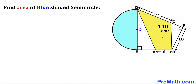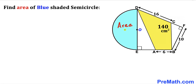Welcome to pre-math. In this video we have a yellow quadrilateral fully confined in another quadrilateral EBFD, such that the area of this yellow quadrilateral is 140 centimeters square. Line segment AB is 6 centimeters, line segment BF is 10 centimeters, and line segment CD is 16 centimeters. We are going to calculate the area of the blue shaded semicircle.